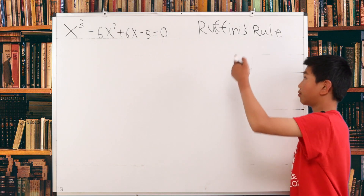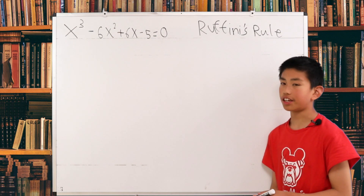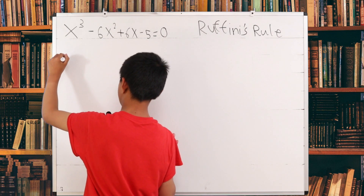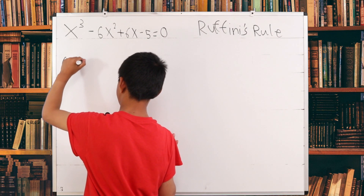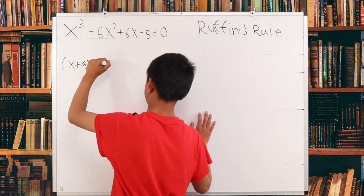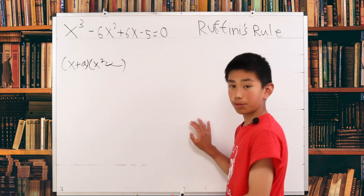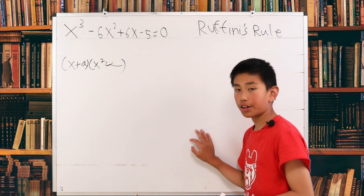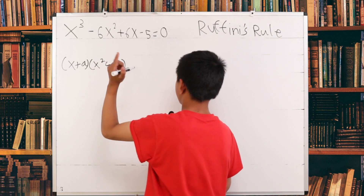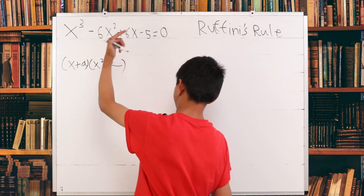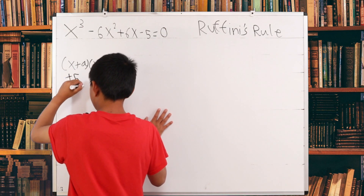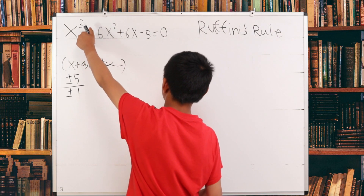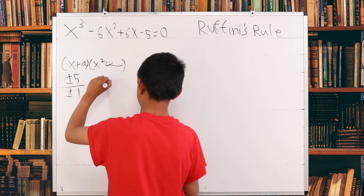The first one involves Ruffini's rule. It states that this polynomial can be broken up into x plus a times x squared plus something. So our first goal is to find a. One way to find the roots is by dividing the last coefficient by the first coefficient — so positive or negative 5 divided by positive or negative 1, since the coefficient of x cubed is 1. This gives positive or negative 5.